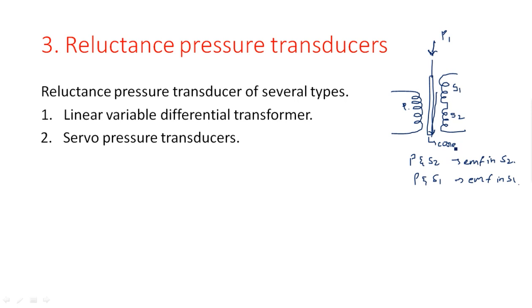That means, depending upon the direction of the applied pressure, the resultant EMF is developed in either S1 or S2. The output voltage V_out is taken as the difference V1 minus V2. One time V1 may be high and one time V2 may be high, depending upon the movement of the soft iron core. This is what the linear variable differential transformer working is.